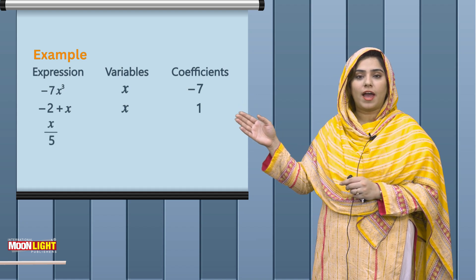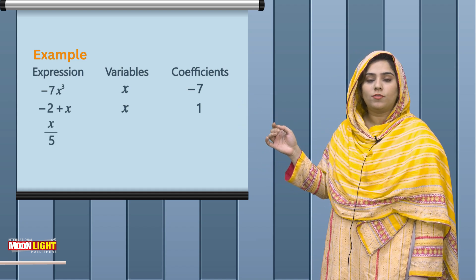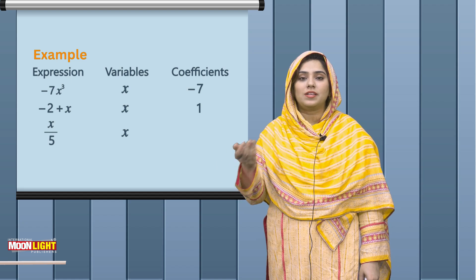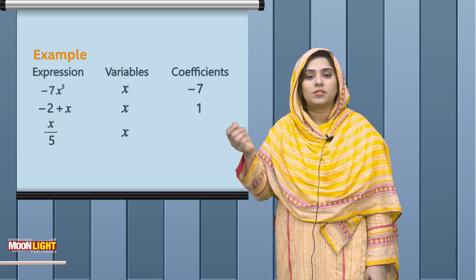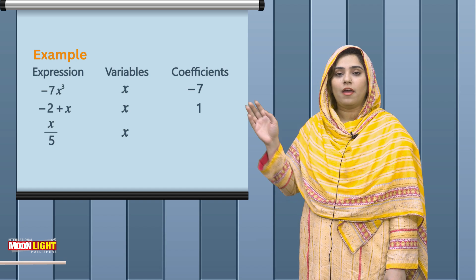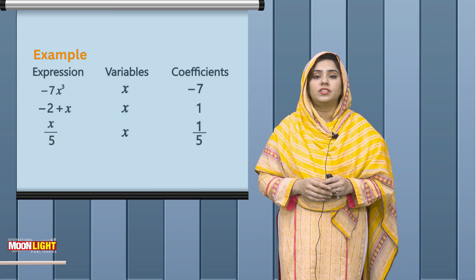Students, if I talk about x by 5, or x/5, then obviously x is the variable because variable means unknown values. And the coefficient is 1/5, which means 1x by 5.